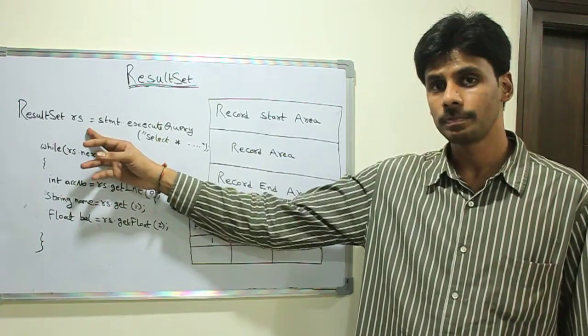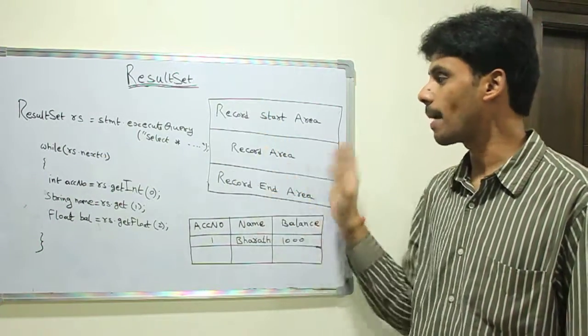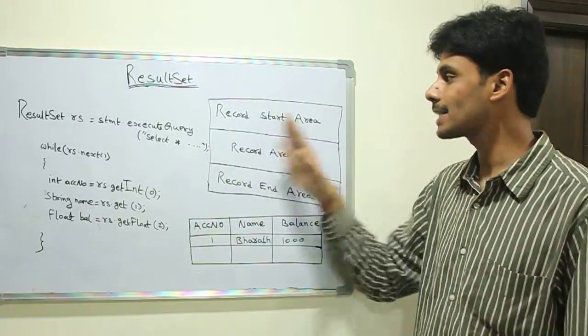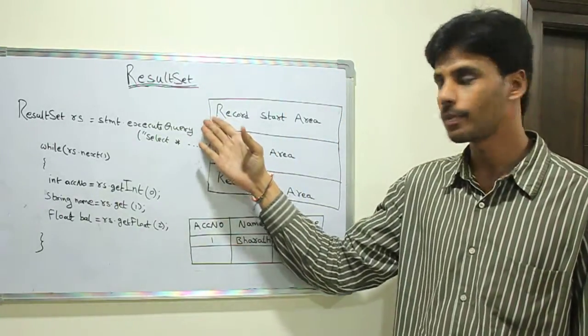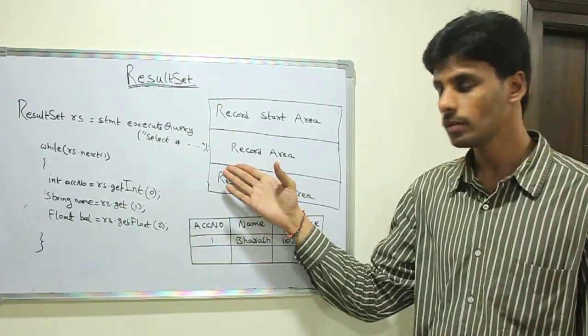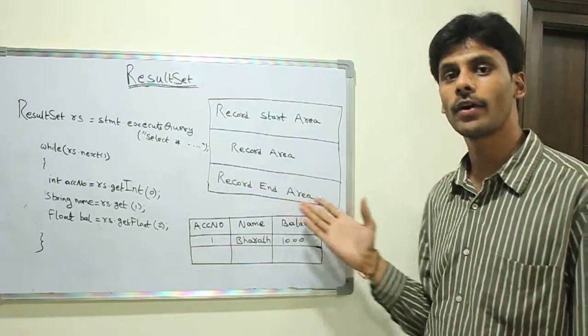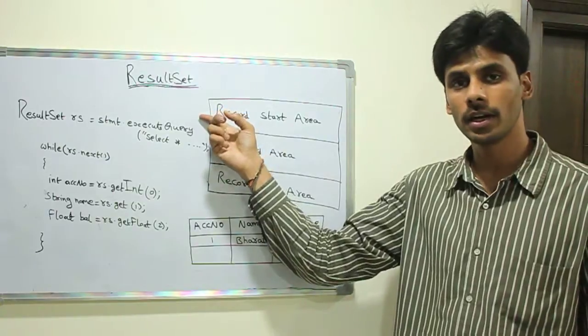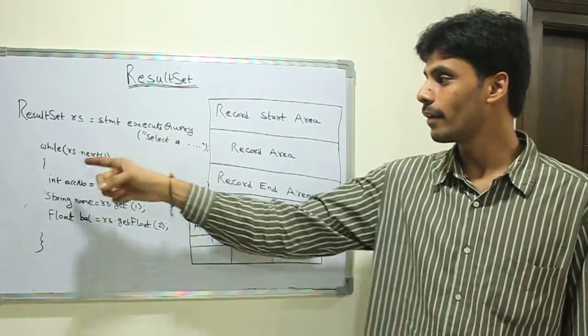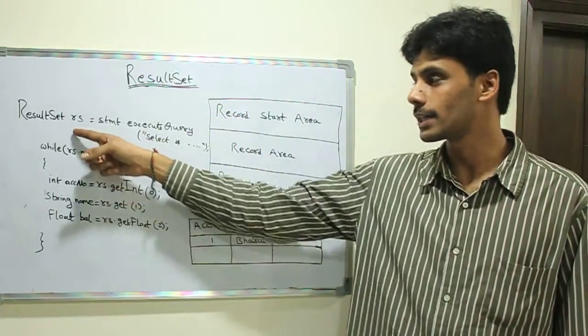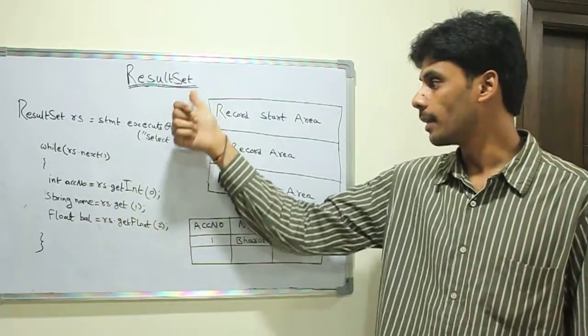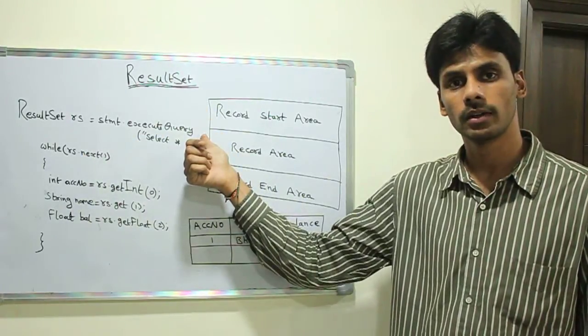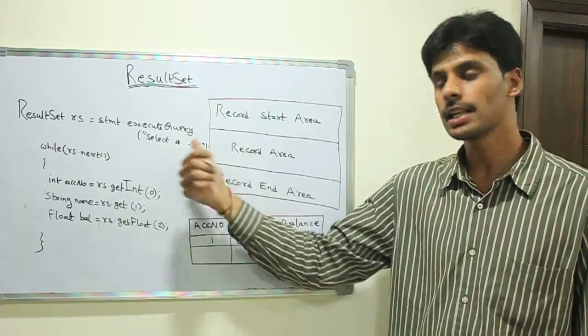Once we have the ResultSet, it can be represented in memory as follows: it has a record start area, then the record area, and then the record end area. The logical pointer initially points to the start. When we invoke the next method on the ResultSet interface, the pointer moves to the first record. When we call next again, the pointer moves to the second record. Depending on how many rows the select query returns, we can iterate through them.